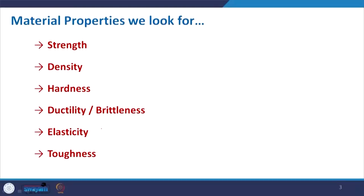There are six basic properties we look for in a building or structural material: strength, density, hardness, ductility or brittleness, elasticity, and toughness.